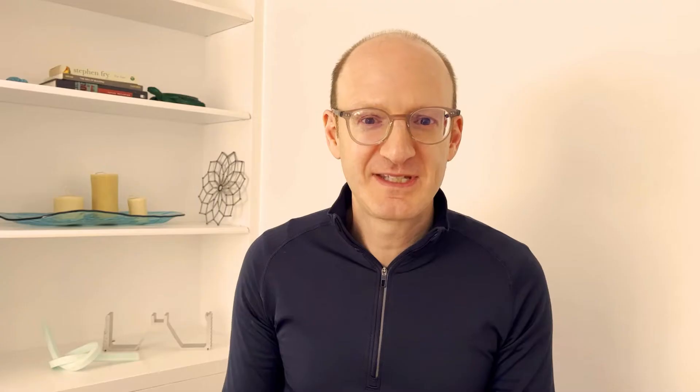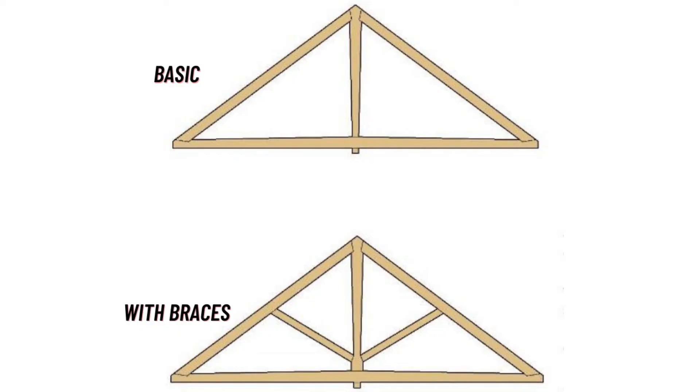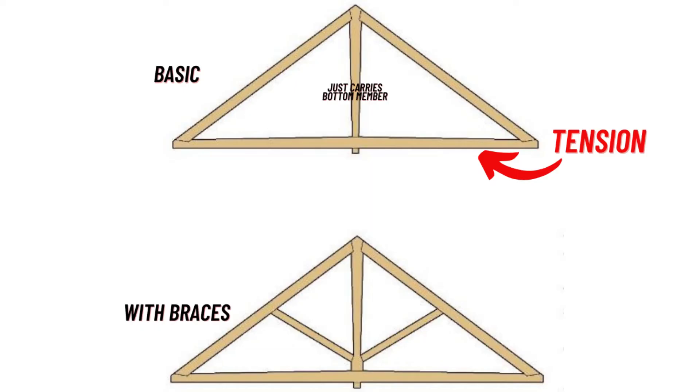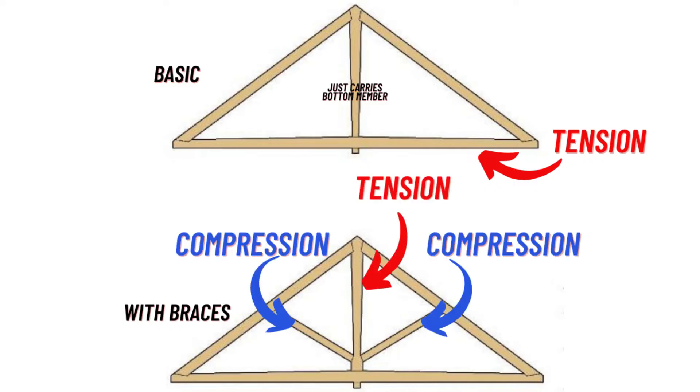The king post truss. This is the most common for a short span — it is very simple. If it's just a king post, that center element and nothing else, then all that center element does is really just hold up the weight of the lower tensile cord. However, if you use this in a roof of a building and you also add diagonals, those new diagonals take compression and put that king post vertical member into tension.